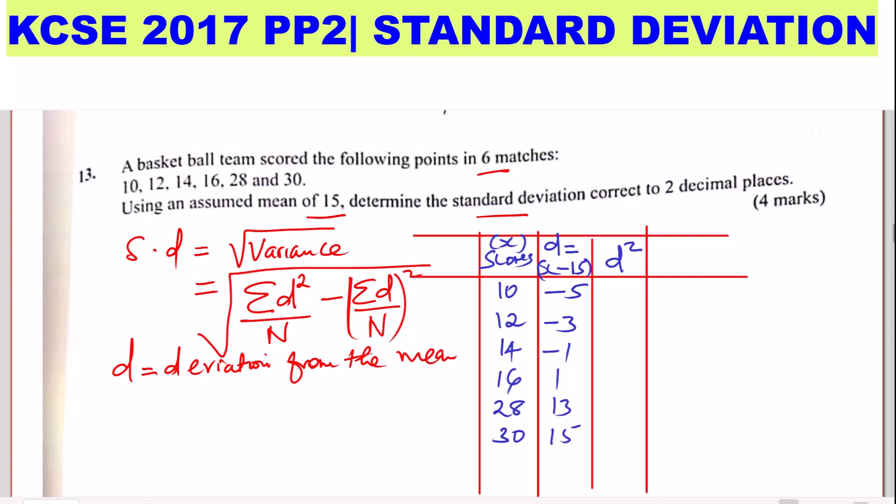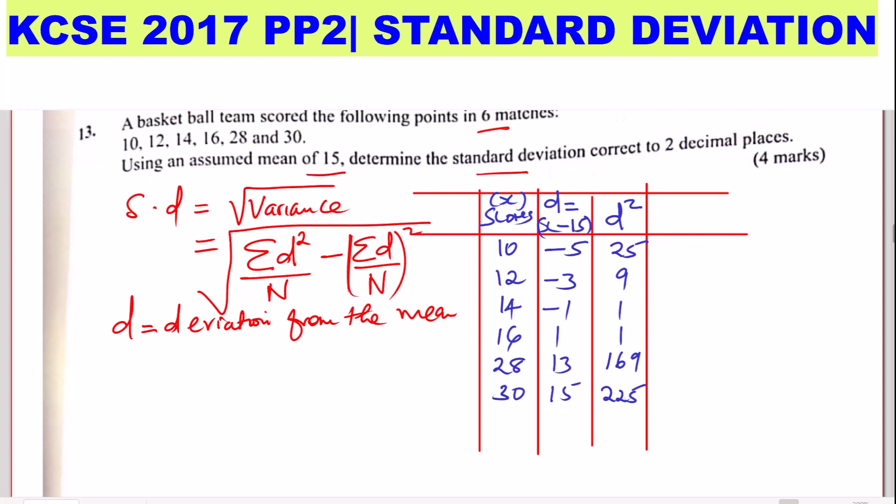Then you square this. Negative 5 squared you get 25. This one will give you 9. This will give you 1. 1 squared again is 1. Then 13 squared you get 169. And this will give 15 squared is 225. So the next thing we need to get is the totals for these. So the summation of D squared. So add everything: 25 plus 9 plus 1 plus 1 plus 169 plus 225. That one will give 430. So this will give 430.